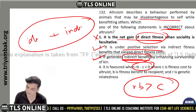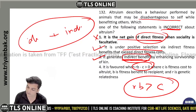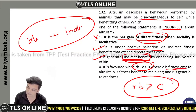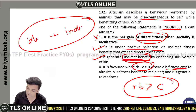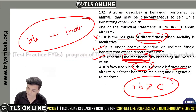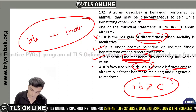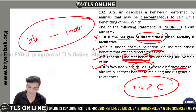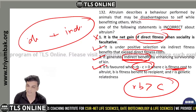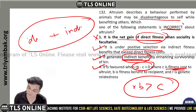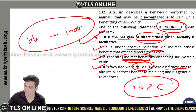c is greater than 0, where c is the fitness cost, r is the relationship coefficient, and b is the benefit. So rb > c is the correct condition — this is Hamilton's Rule. Therefore, option A is the correct answer. That is why it is the right option.